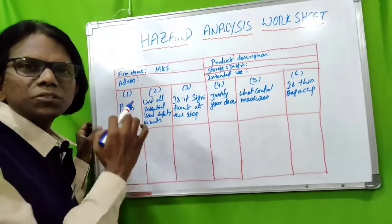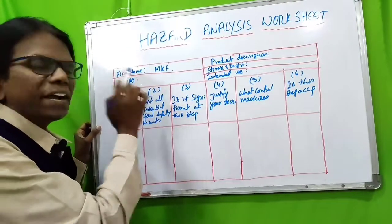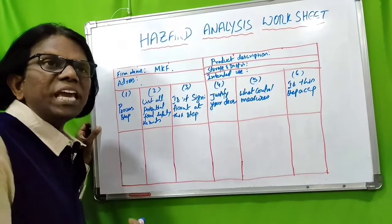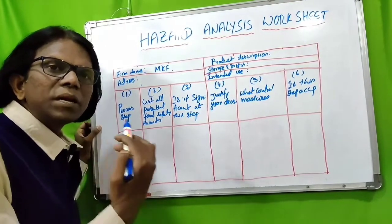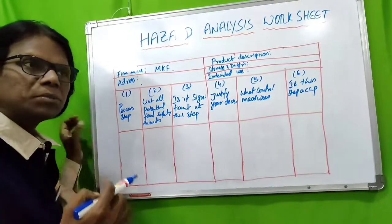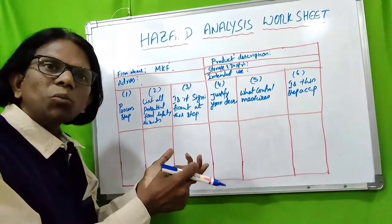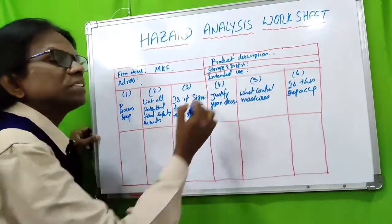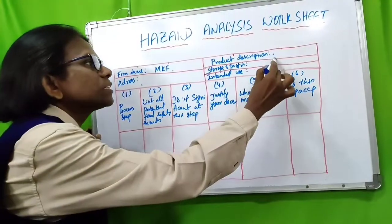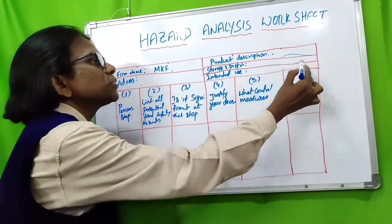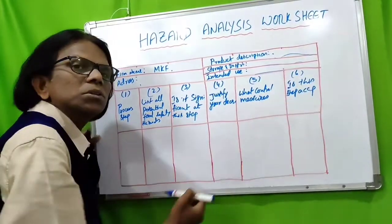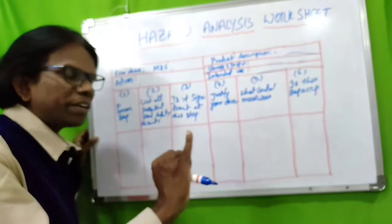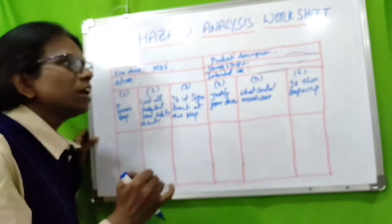The first step in completing the hazard analysis worksheet is to mention the firm name and address, and then include the information gathered during the preliminary steps. The preliminary steps — sub-steps one through five — include the product description, storage and distribution, and intended use.